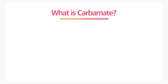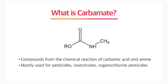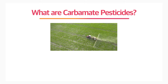What is a carbamate? Carbamate is a compound from the chemical reaction of carbamic acid and amine. They are mostly used for pesticides, insecticides, and organochlorine pesticides.